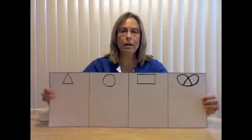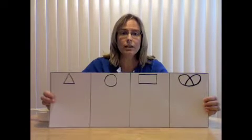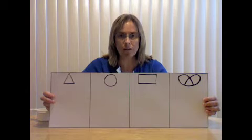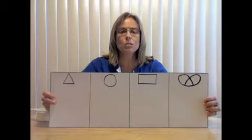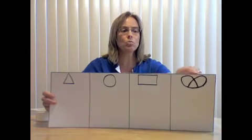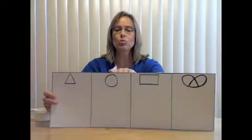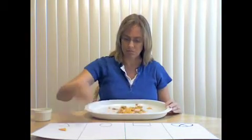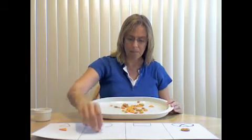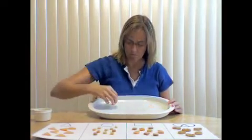Here is our sorting mat for this task. As you can see, it is divided into four sections, one for each shape in our snack mix. To sort our snack mix, we will place them one at a time into their corresponding section — pretzels with pretzels, rectangles with rectangles, circles with circles, and triangles with triangles. Let's get started. The fun thing about sorting the Cheerios snack mix is that when we get done, we get to eat something.